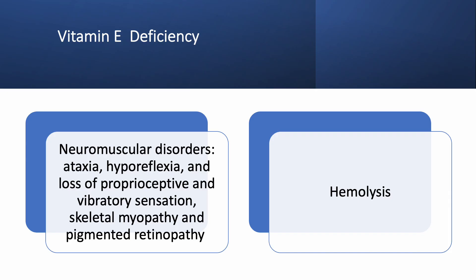Vitamin E deficiency can cause many problems. It can cause problems with the nerves and muscles. You can have ataxia, meaning the gait and walking become really disturbed. The reflexes become very hypoactive. The person can lose sense of pressure, which can cause falling, and can lose sense of vibration. Also, you can have muscle problems and even eye problems. Moreover, it can cause hemolysis, meaning destruction of red blood cells.